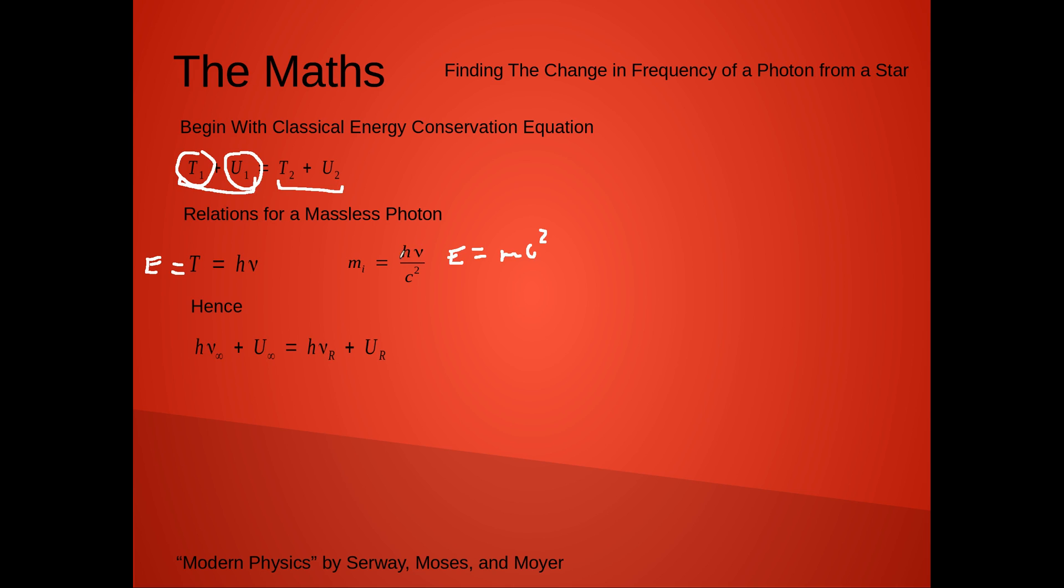So, using this, plugging in our frequency and Planck's constant as a kinetic energy into those places, we have Planck's constant times the frequency at infinity plus the potential at infinity equals the kinetic energy the photon has at the radius of the star plus the potential energy it has at the radius of the star.